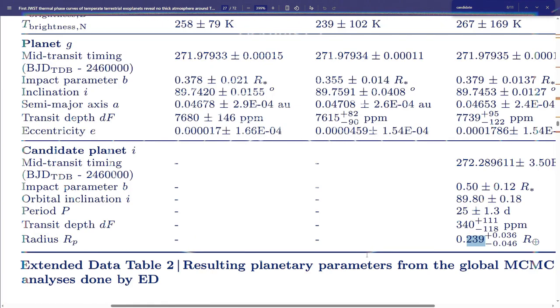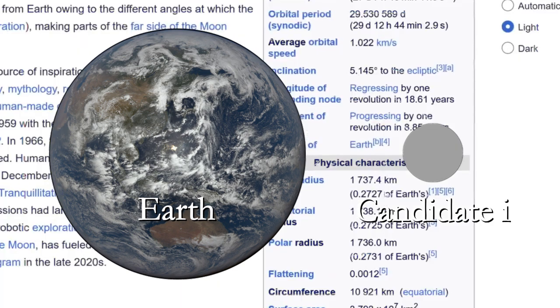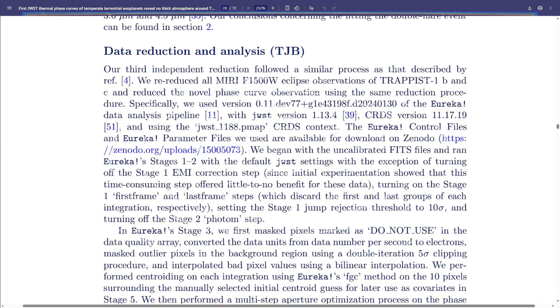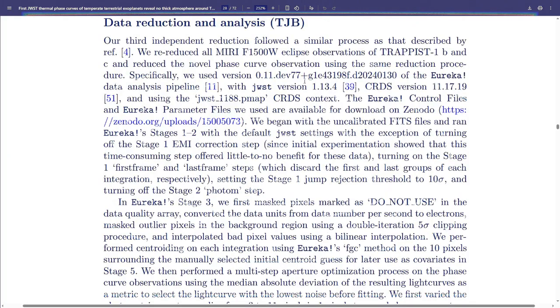Radius, 0.239 Earth radii. How big is the moon? 2.7. Okay. The tiny boy. Data reduction. Oh my god. 72 pages. What have I gotten myself into?